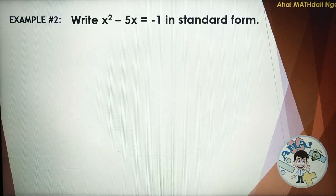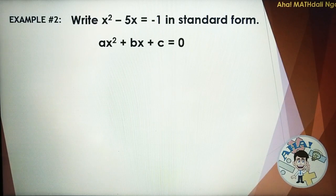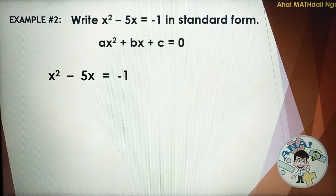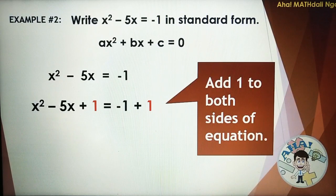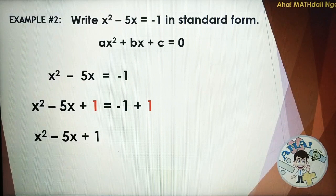Second example: Write X squared minus 5X is equal to negative 1 in standard form. The standard form is AX squared plus BX plus C is equal to 0. We have X squared minus 5X is equal to negative 1. Following the format, negative 1 must become 0, so we add positive 1 to both sides of the equation. It becomes X squared minus 5X plus 1 is equal to negative 1 plus 1. Simplifying, we have X squared minus 5X plus 1 is equal to 0.